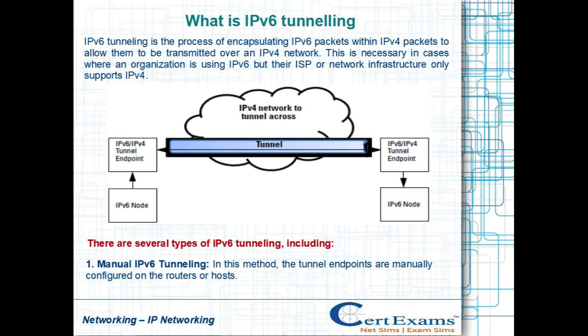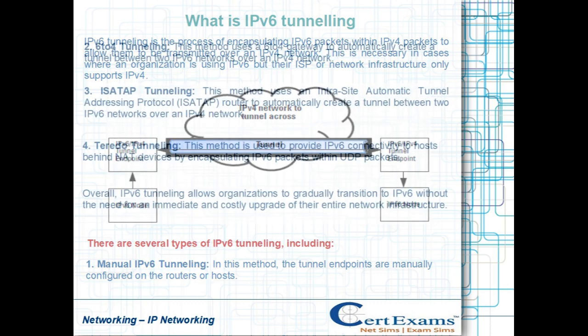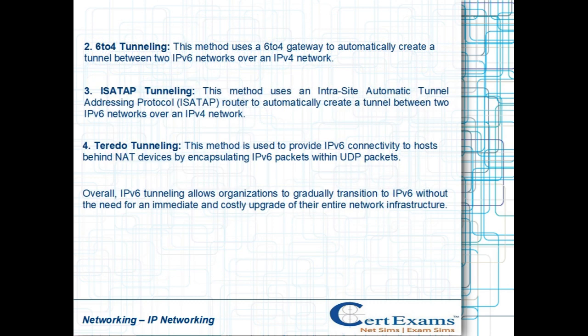There are several types of IPv6 tunneling, including Manual IPv6 tunneling, where the tunnel endpoints are manually configured on the routers or hosts, and 6-4 tunneling, which uses a 6-4 gateway to automatically create a tunnel between two IPv6 networks over an IPv4 network.